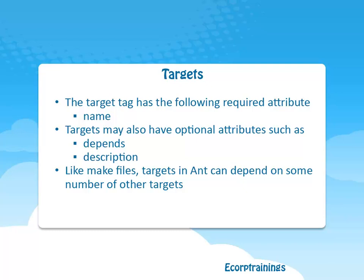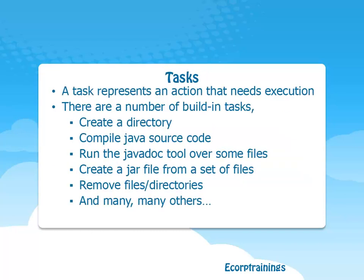For example, we might have a target to create a jar file which first depends upon another target to compile the code. A build file may additionally specify a default target. A task represents an action that needs execution. Tasks have a variable number of attributes which are task dependent. There are a number of built-in tasks, including: create a directory, compile Java source code, run the Javadoc tool over some files, create a jar file from a set of files, remove files or directories, and many others.